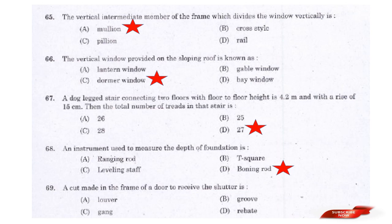Question: A cut made in the frame of a door to receive the shutter is called — Answer: Option D — A Rabbet. A cut made in the frame of the door to receive the shutter is called a rabbet.